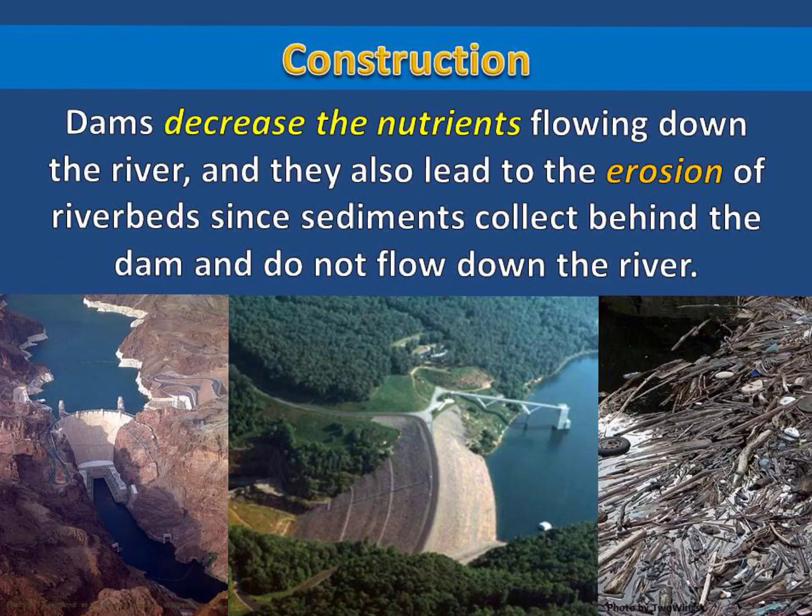There are also some species of fish that swim up certain rivers to reproduce. If dams are built on these rivers, then it will block these fish and keep these populations from reproducing.